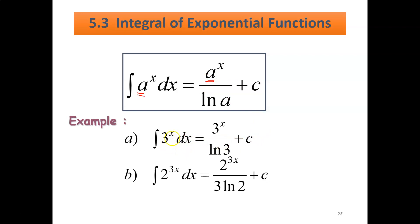Let's see the example: integrate 3ˣ dx. The constant here is 3. So you write back 3ˣ, divided by ln(3). Why ln(3)? Because 3 is the base constant. So the answer is 3ˣ over ln(3) plus c.